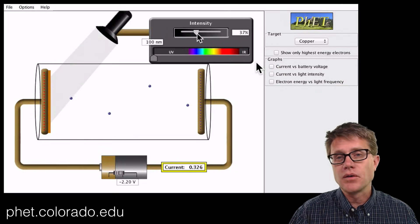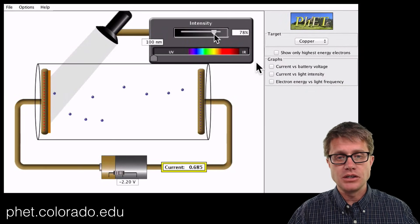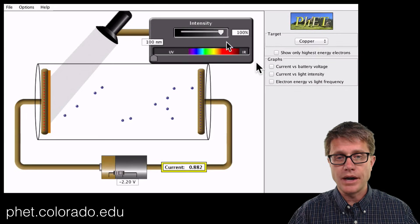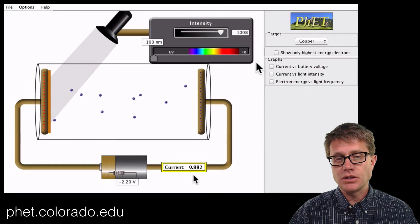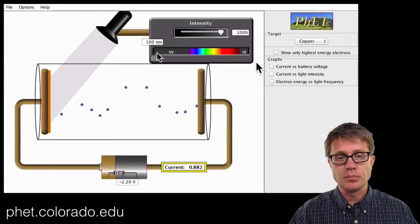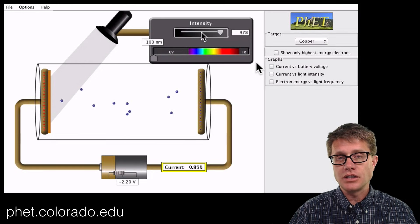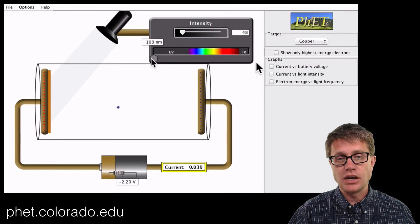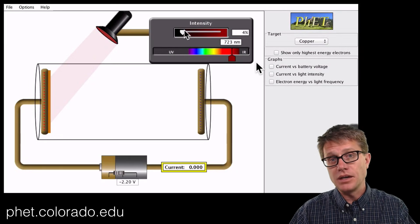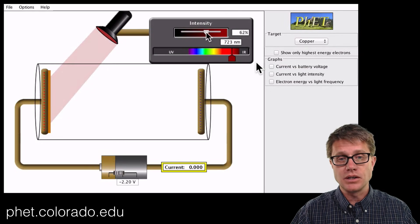So this is a model of the photoelectric effect. It is the PHET simulation. I would encourage you to try it. And so what you can do is you can measure the electrons that are kicked off the metal in a simple little current. And then you can change the intensity and you can change the wavelength.